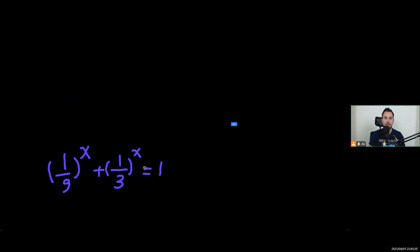So now I hope that you see what the next step is, because 1 over 9 is the same as 1 over 3 to power of x multiplied by 1 over 3 to power of x. That's the first term, plus this term 1 over 3 to power of x equals 1.